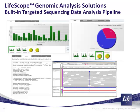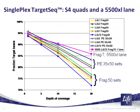The LifeScope targeted resequencing pipeline provides histograms and downloadable tables of data, reports on variants detected, and links to inspect reads through the IGB genomic browser hosted by the Broad Institute.